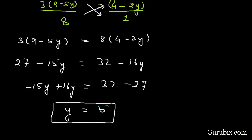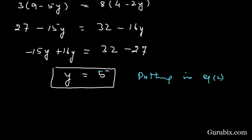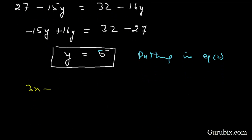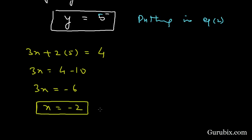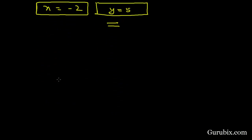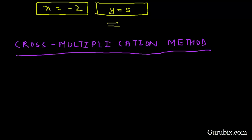Now we put the value y = 5 into equation number two: 3x + 2(5) = 4, which gives 3x = 4 - 10, so 3x = -6, therefore x = -2. The solution by substitution method is x = -2 and y = 5.